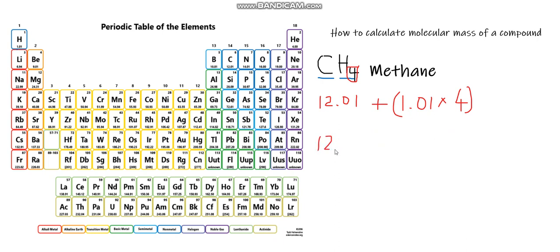So after this, the second step is to add everything: 12.01 plus 4.04, and the answer is 16.05. So the molar mass for methane is 16.05.